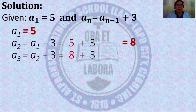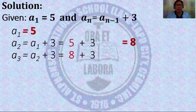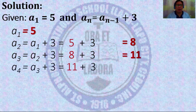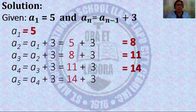For a_3, that is equal to a_2. Since n = 3, n minus one is two, so a_3 = a_2 + 3 = 8 + 3, which is equal to eleven. For a_4, we have a_3; four minus one plus three equals 11 + 3, equivalent to fourteen. And a_5 = a_4 + 3, and a_4 is fourteen plus three, which is equal to seventeen.